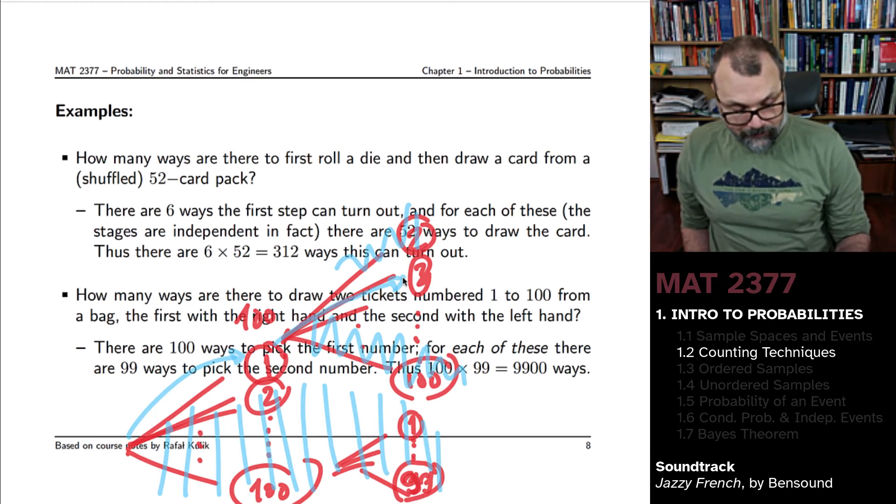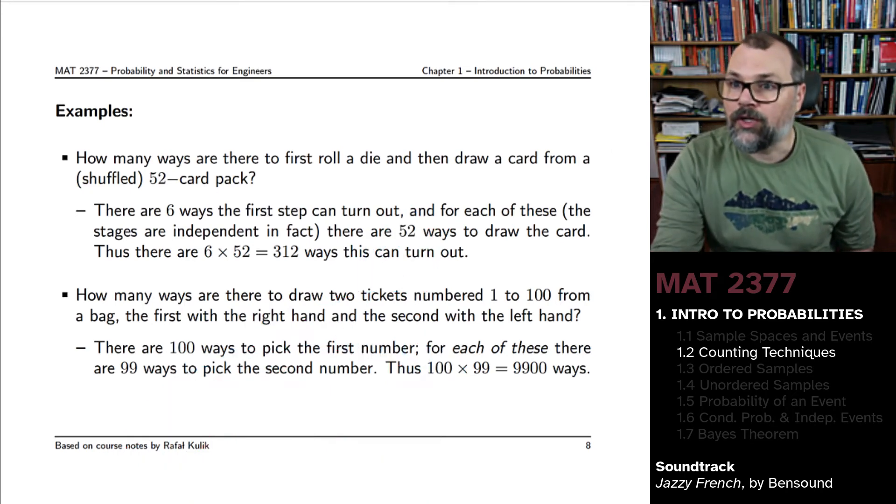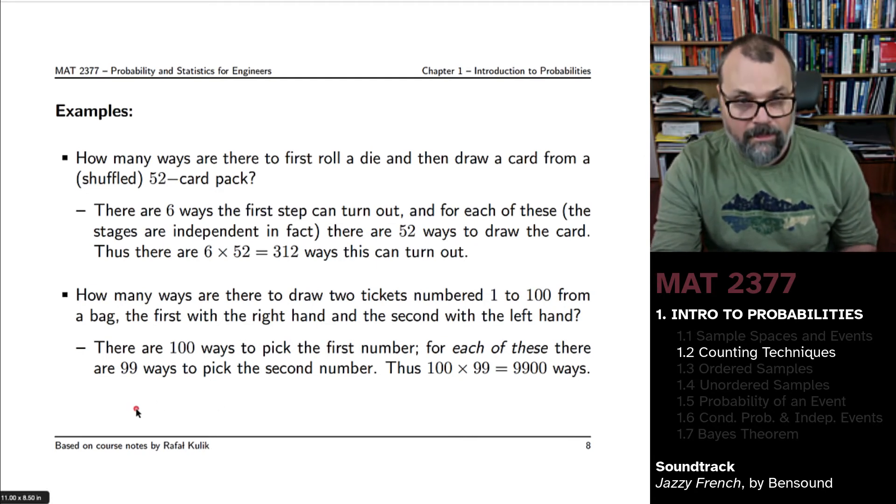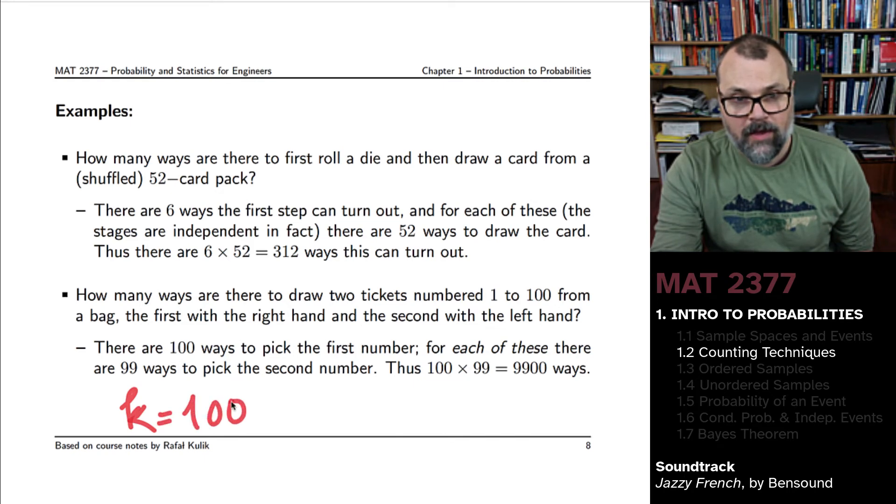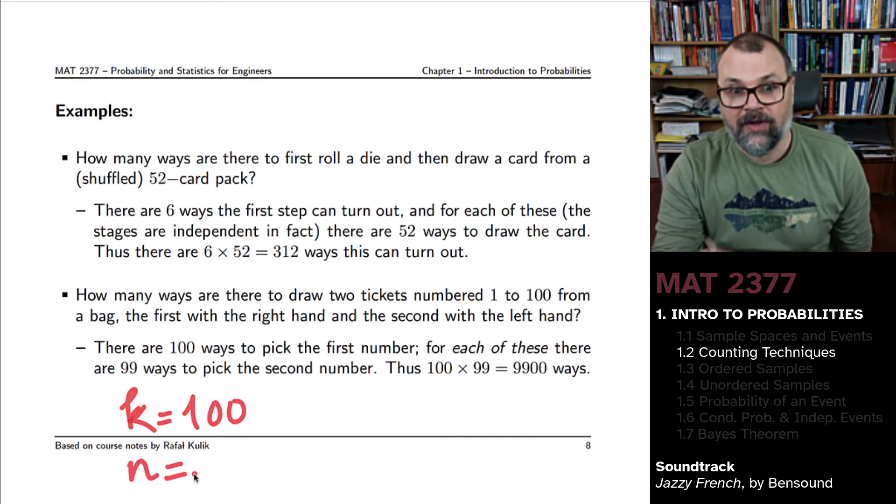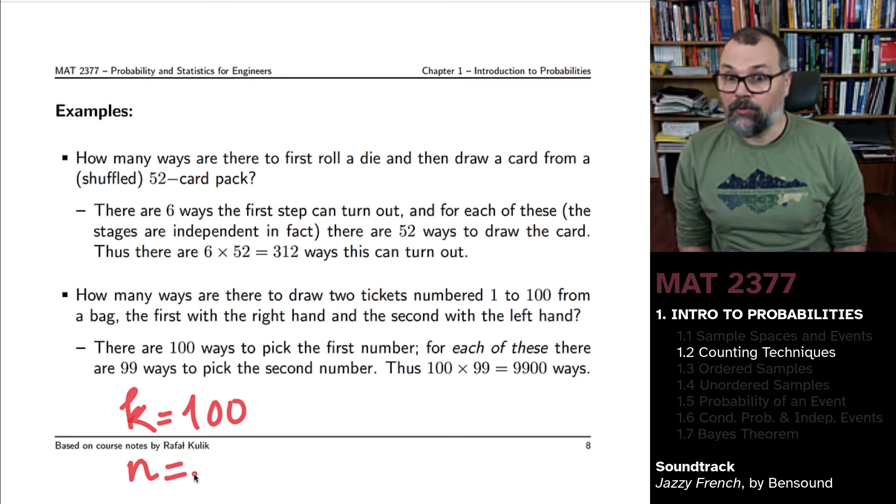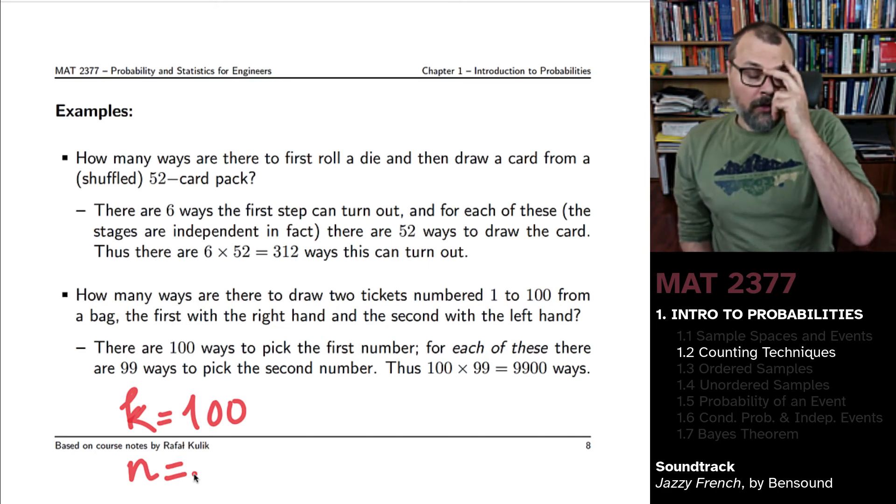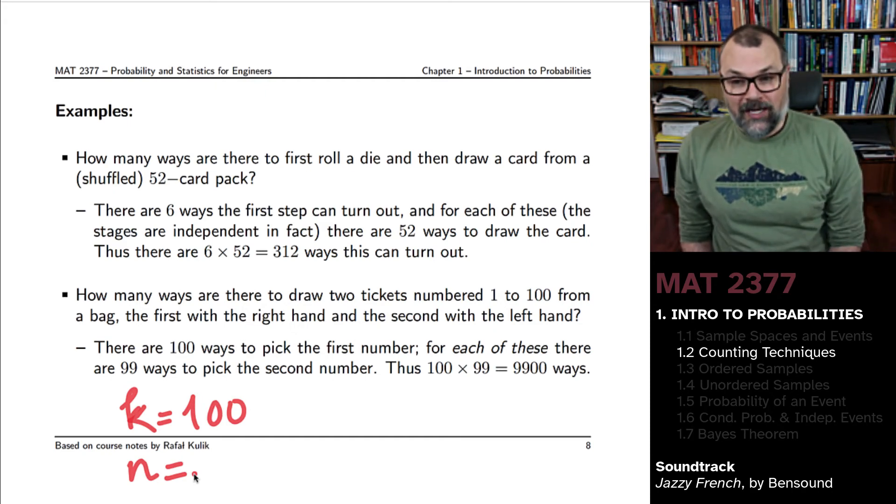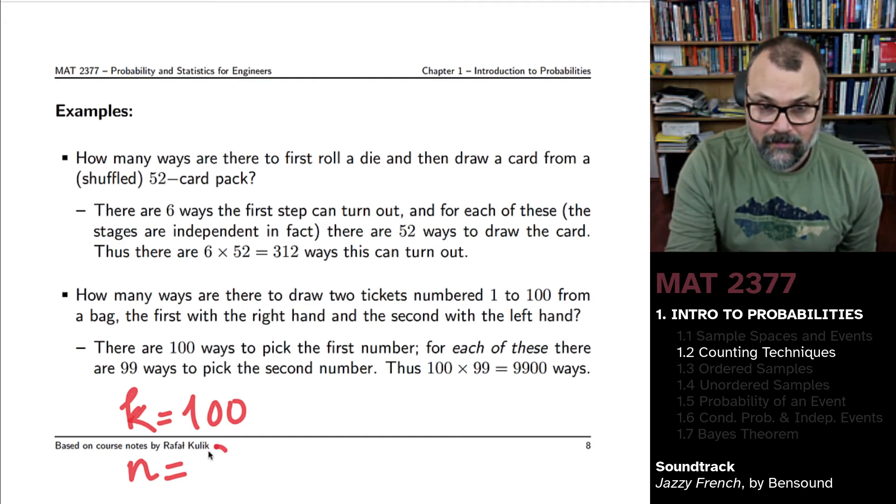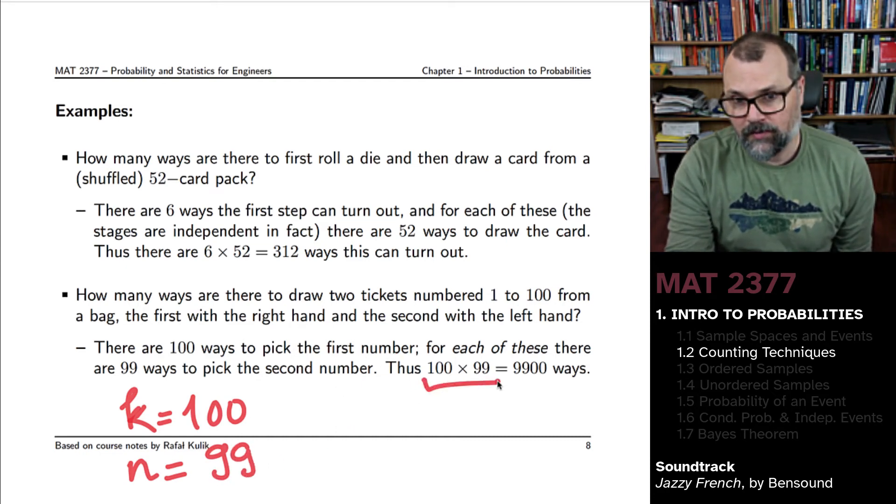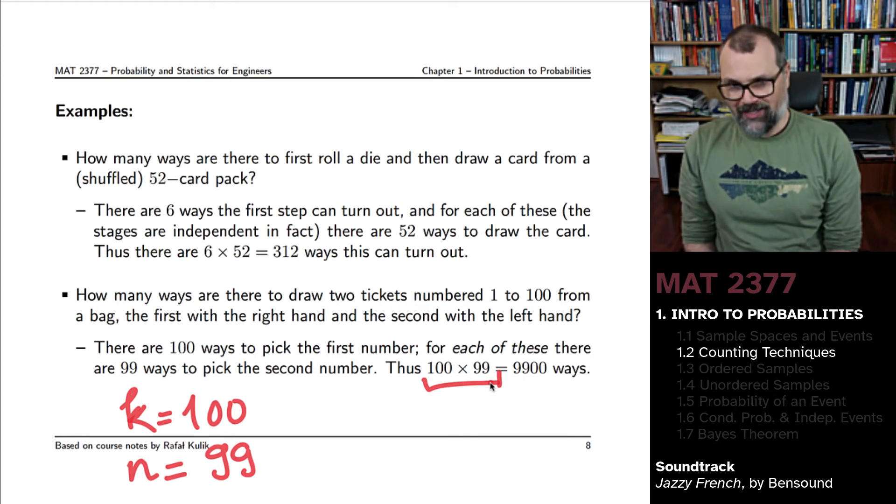How many such combinations are there in total? There are going to be 100 choices for your K. And for your N, the number of items in each of the bags, the number of options open to you once the first step, the first stage has been completed, that's 99. So the total number of ways, K times N, 100 times 99, that's 9900 ways.